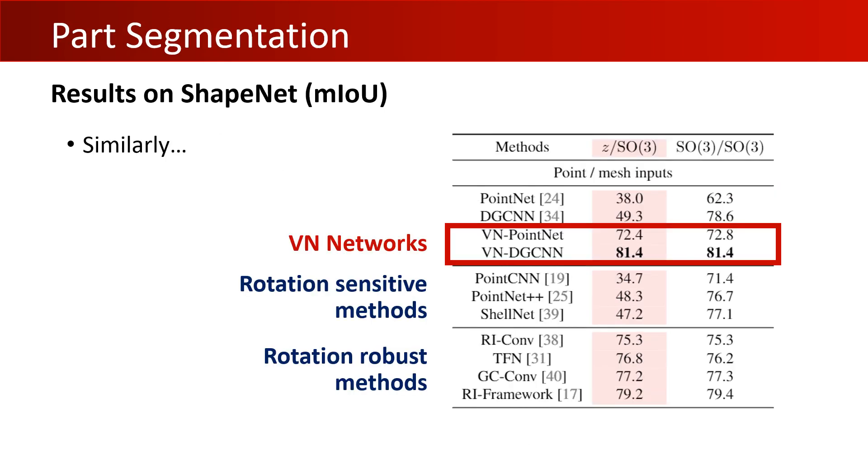For part segmentation on ShapeNet, we can see similar results. VN-DGCNN still achieves the best performance, even compared to the methods that additionally use surface normals.